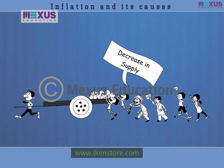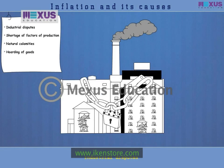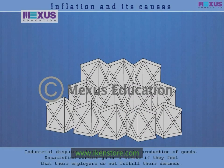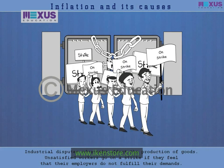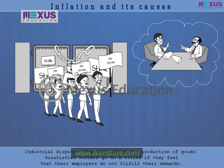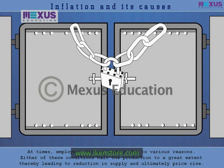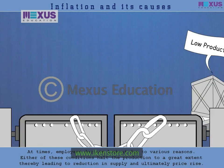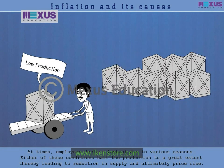Let us understand various factors which cause a decrease in the supply of goods and services. Industrial disputes adversely affect the production of goods. Unsatisfied workers go on strike if they feel that their employers do not fulfill their demands. At times, employers declare lockouts due to various reasons. Either of these conditions halts production to a great extent, thereby leading to a reduction in supply and ultimately price rise.